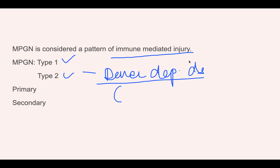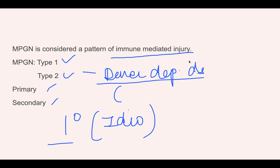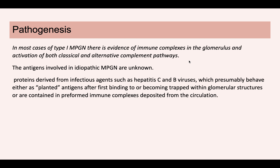MPGN is also divided into primary and secondary forms. The primary form has an unknown etiology — it is idiopathic. In the secondary form, certain other diseases lead to MPGN-like morphology. We will first discuss the pathogenesis and then the morphology.